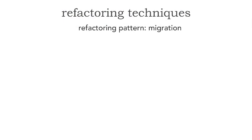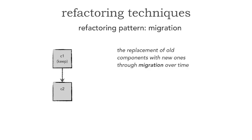Let's take a look at migration first. When we look at the migration refactoring pattern, essentially what this is, is the replacement of old components with new ones through a migration over time. For example, let's assume that we're going to keep component 1 — C1 — but we're either replatforming or migrating C2. The migration pattern effectively replaces C2 with a new component or a new system.